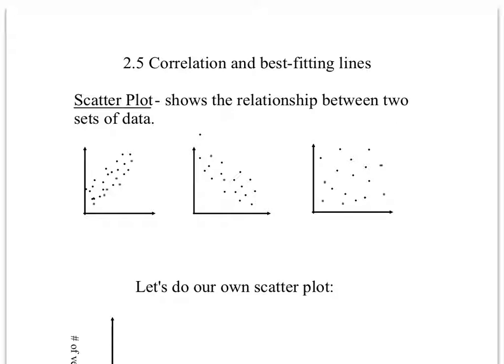Each dot represents two different things for one situation. Maybe it's a person and how many siblings they have and how many cars they have, things like that. So here I have three examples of scatter plots.